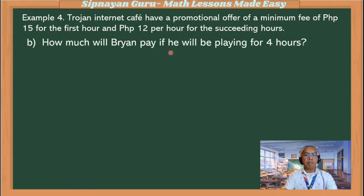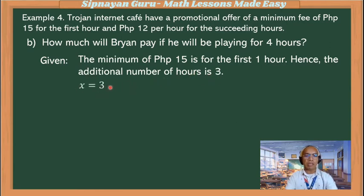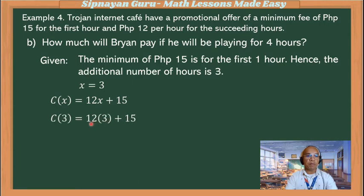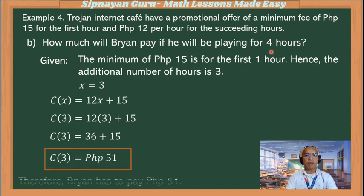How much will Brian pay if he will be playing for 4 hours? The minimum 15 pesos is good for 1 hour, so Brian has 3 additional hours, meaning x = 3. The function C(x) = 12x + 15. So C(3) = 12 times 3 plus 15, which is 36 plus 15. Therefore, Brian has to pay 51 pesos if he is playing for 4 hours.